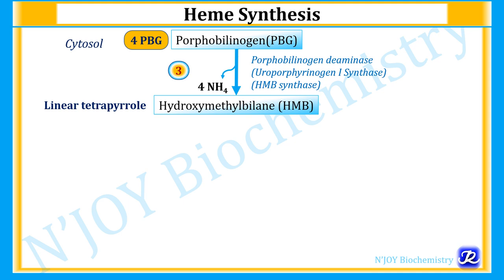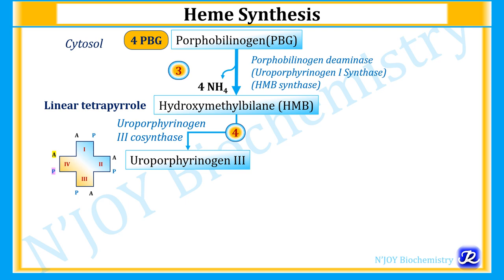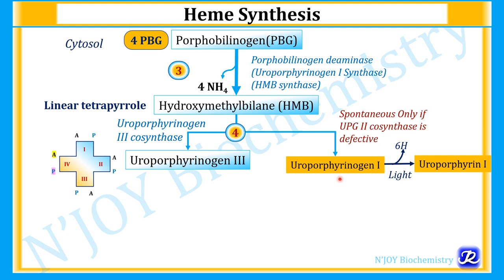Step 4 also occurs in cytosol and is catalyzed by uroporphyrinogen 3 cosynthase, forming uroporphyrinogen 3 with asymmetrical substitution groups: acetyl, propionate, acetyl, propionate, acetyl, propionate, propionate and acetyl. Spontaneously, hydroxymethylbilane can also form uroporphyrinogen 1 (symmetrical arrangement: AP, AP, AP and AP). When uroporphyrinogen is exposed to light, uroporphyrin 1 is formed, and the formation of uroporphyrin and coproporphyrin 1 occurs in porphyria.